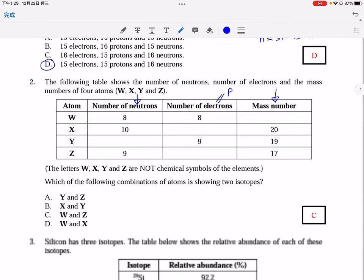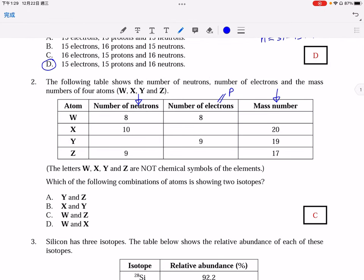So for atom X, as the mass number is 20, it means that the number of electrons should be done by this subtraction, giving 10 electrons.